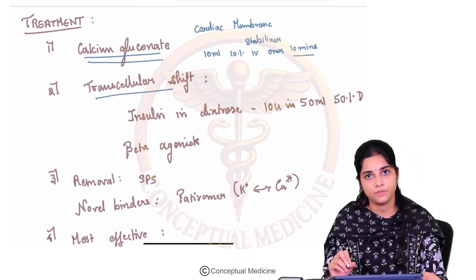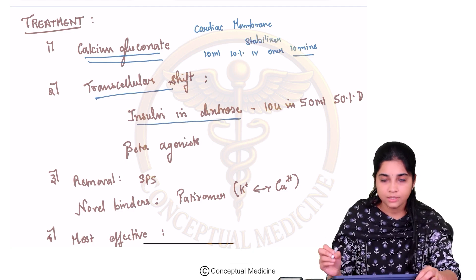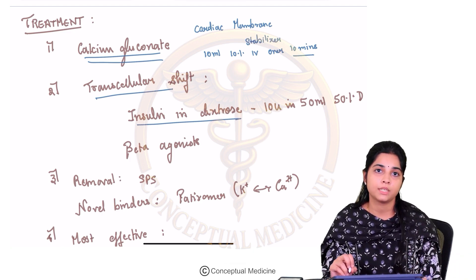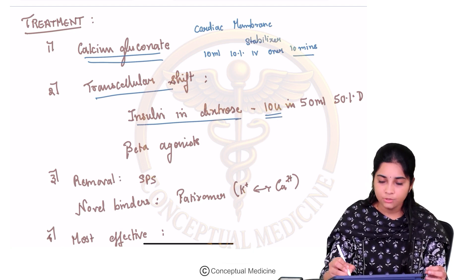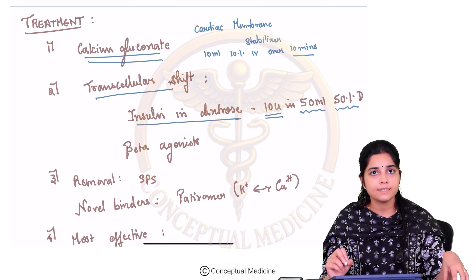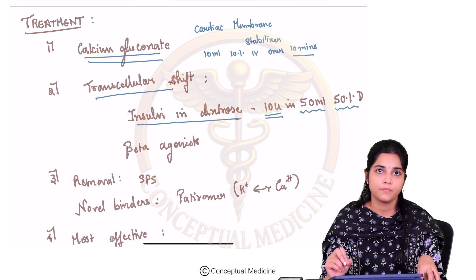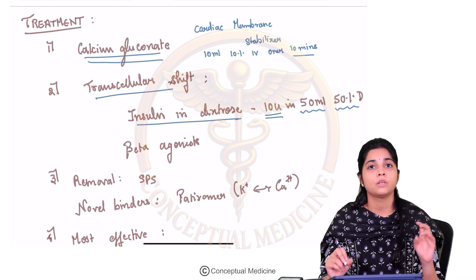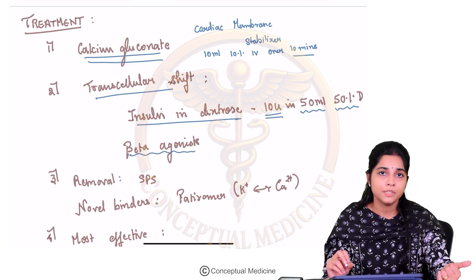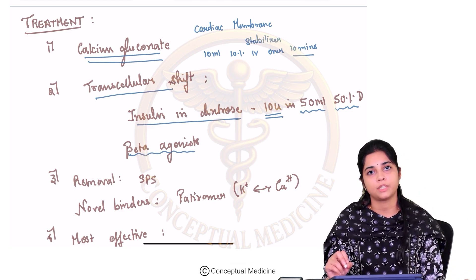Then address transcellular shift: give insulin in dextrose — specifically 10 units of insulin in 50 ml of 50% dextrose. Direct insulin alone risks hypoglycemia, so it is always given with dextrose. This pushes potassium intracellularly. You can also give inhaled beta agonists — in the ward, three rounds of salbutamol are given, one round every 20 minutes, which also pushes potassium inside.